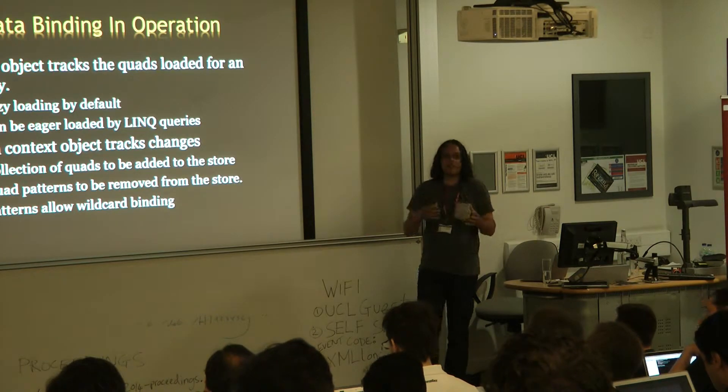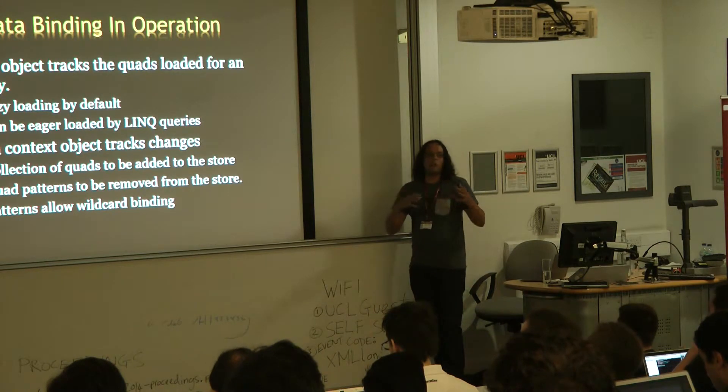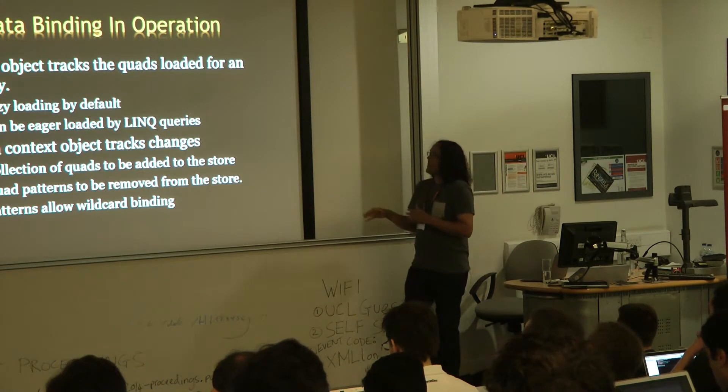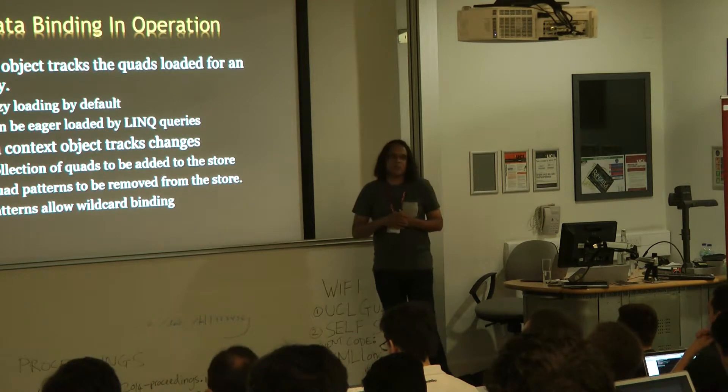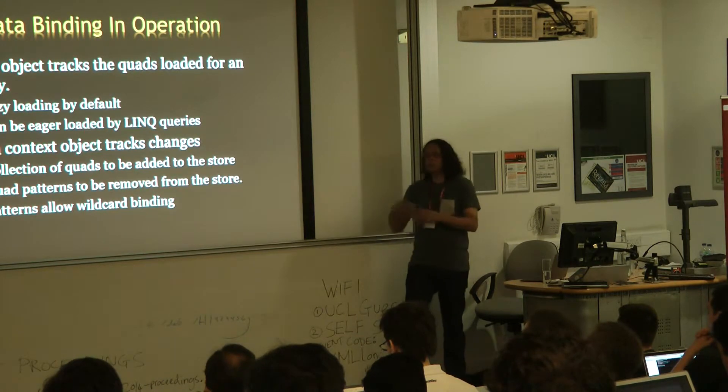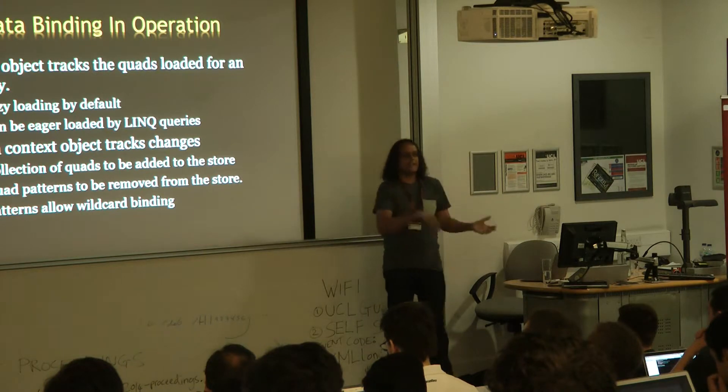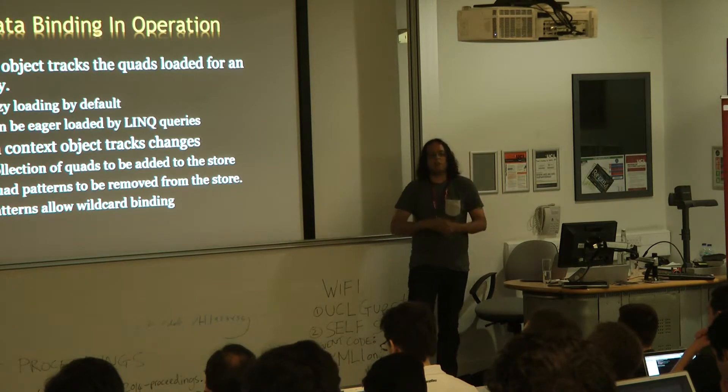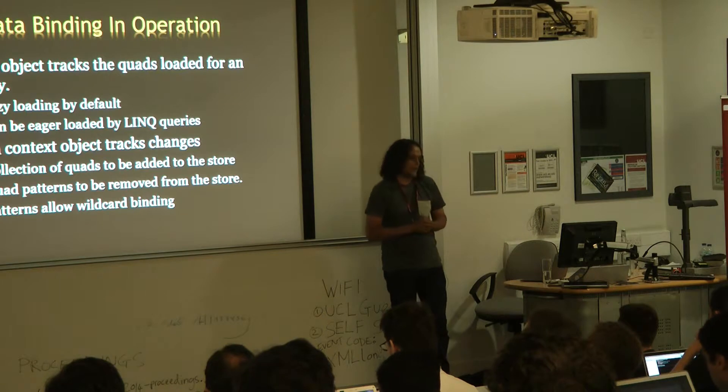As well as the DataObjects that are generated, there's a ContextObject, and this is just tracking all of our changes. The nice thing about ContextObjects is that we can track changes simply as triples or quads that we've added, and quads that we're going to delete. And then when we do a SaveChanges, we can just push all of those up to the server in a single batch.